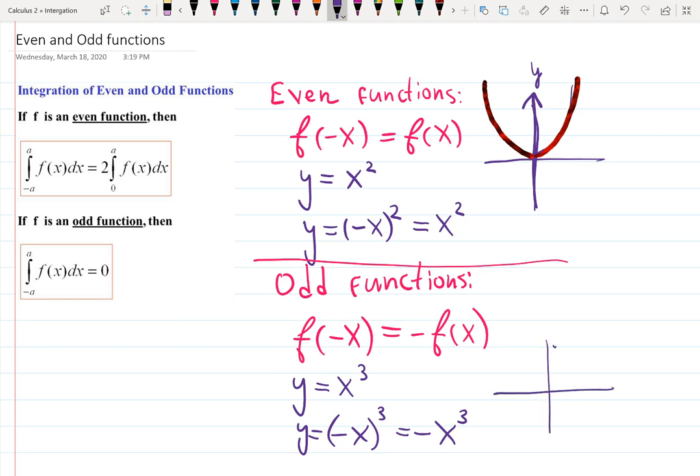The property of the odd function is it is symmetrical as well, but now it's symmetrical in the other way. If you fold the first quadrant to the third quadrant, then they match. So the piece over here will match with the piece on the bottom left. And that's how you know, based on the graph, that the function is odd.